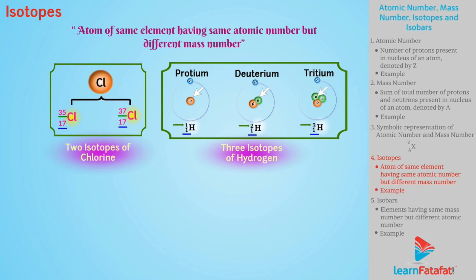Hence, isotopes can be defined as atom of same element having same atomic number but different mass number. For example, carbon has isotopes C-6-12 and C-6-14.